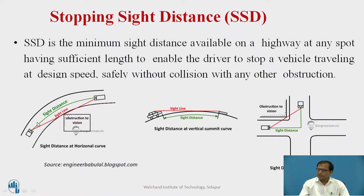Considering this particular location where the vehicle is negotiating on a horizontal curve, you can see that the sight line is restricted by the corner of the obstruction. Because of the obstruction, the sight line of both drivers gets reduced. The distance between these two vehicles becomes lesser, and there might be an accident because of the shorter distance, with the driver unable to take any action in the first instance.